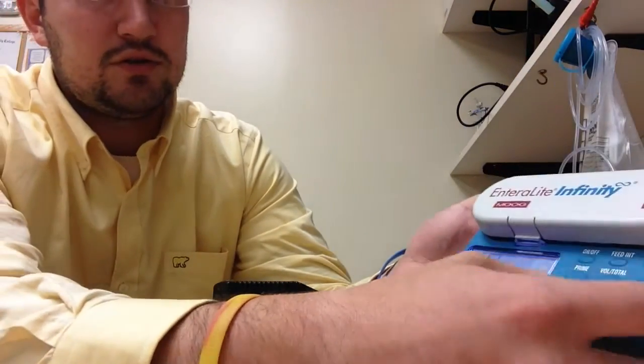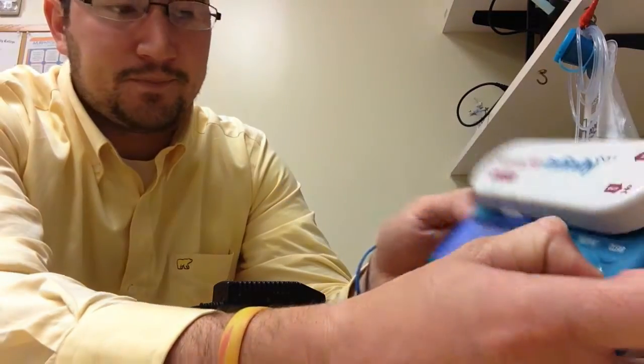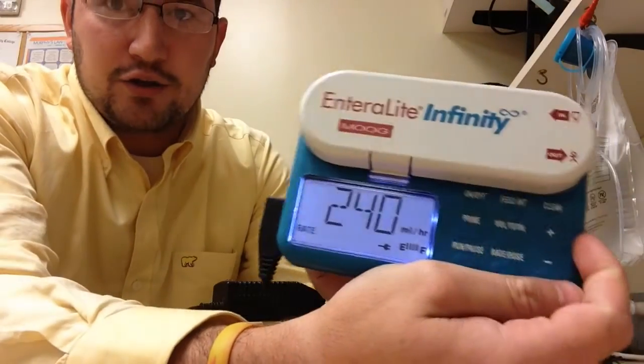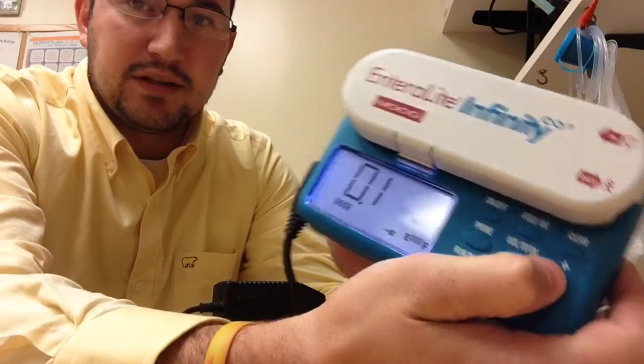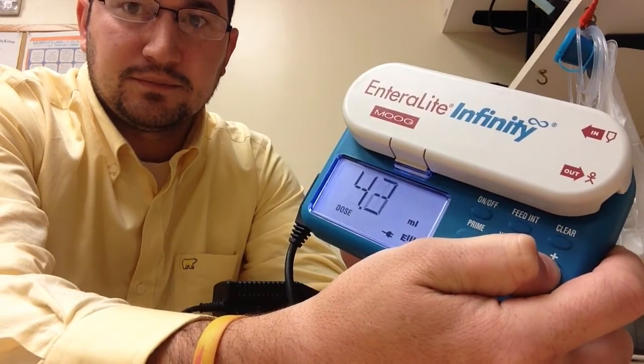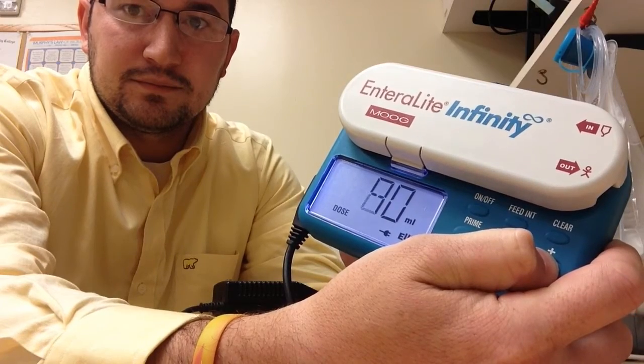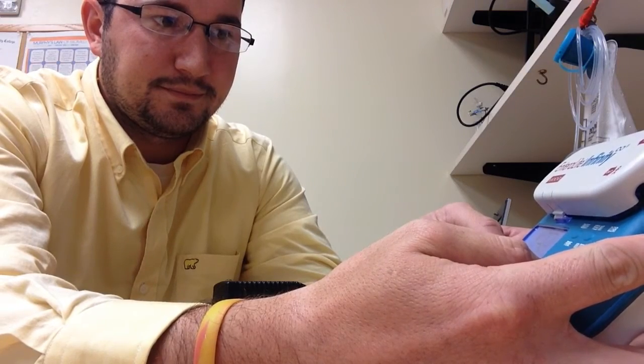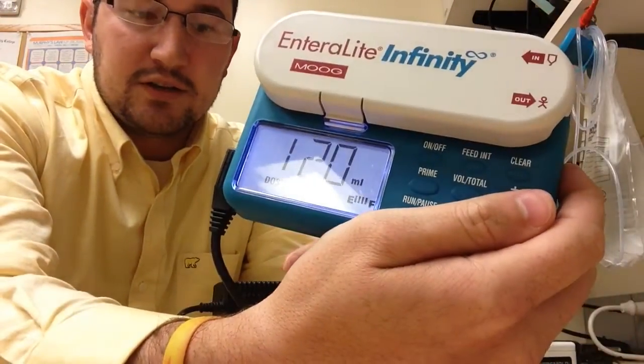So when programming the pump, you just use the up and down. Click on your rate dose button. The first one is the milliliters per hour, so we're going to take that up to 240. Now we're at our 240, and now we're going to take the milliliters up to 120. A little too far. And now we have the milliliters at 120.